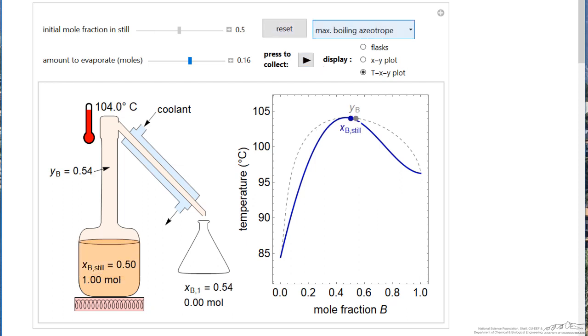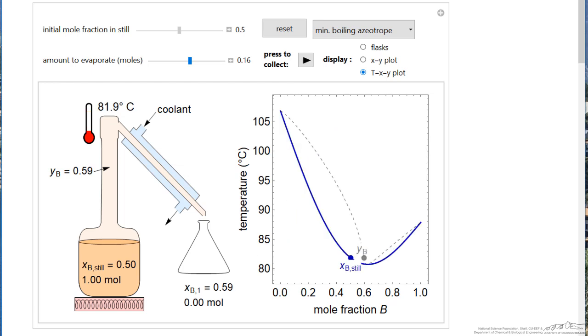And finally, we could also look at a minimum boiling azeotrope. And now as I press play, again, the temperature increases, but notice we're moving away from the azeotrope.